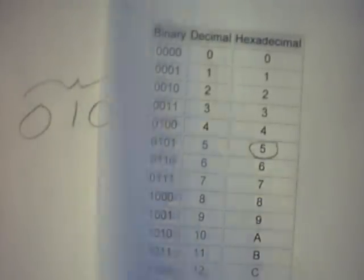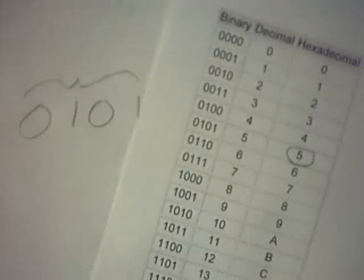So, 0, 1, 0, 1 is hexadecimal 5, and 1, 0, 0, 1 corresponds to hexadecimal number 9.